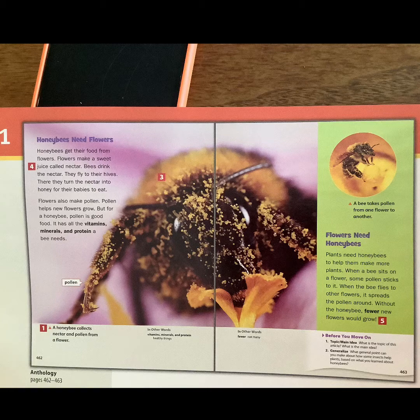Flowers need honeybees. Plants need honeybees to help them make more plants. When a bee sits on a flower, some pollen sticks to it. When the bee flies to other flowers, it spreads the pollen around. Without the honeybee, fewer new flowers would grow — and there we go back to our word 'fewer,' meaning not many. See how they help each other out.